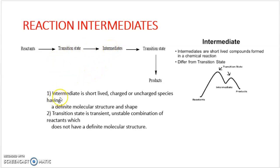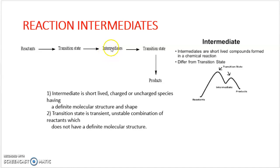What is an intermediate? An intermediate is a short-lived charged species — it may have a positive charge, a negative charge, or it may be an uncharged species like free radicals. The main thing is that this intermediate has a definite molecular structure and shape, and it exists.